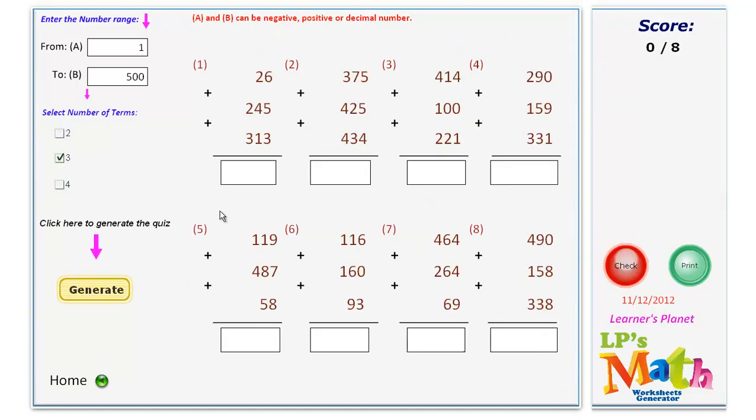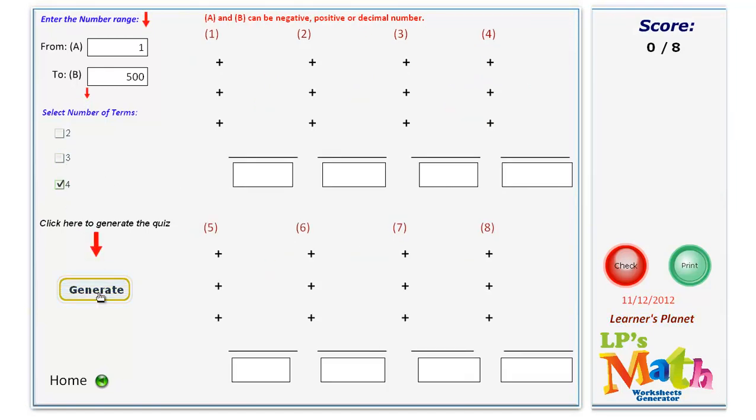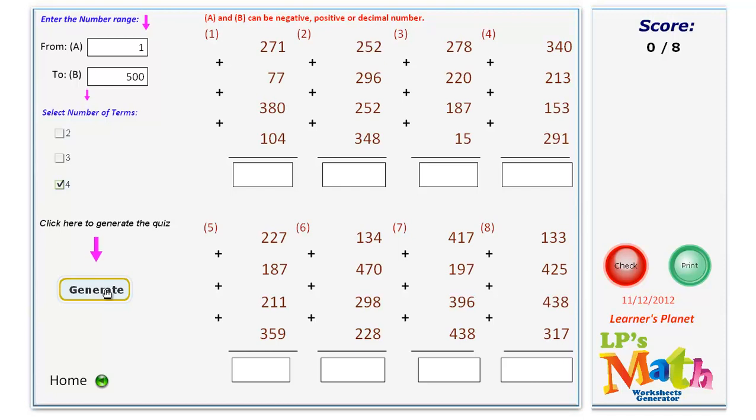If you wish to do 3 term addition, select the number of terms as 3, enter the number range, you will get the worksheet like this.